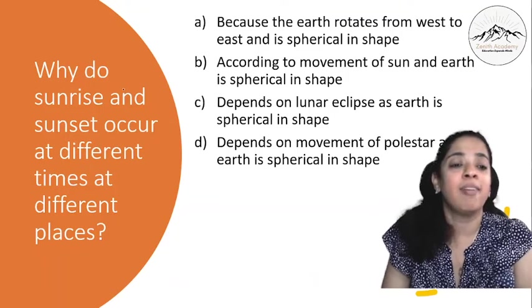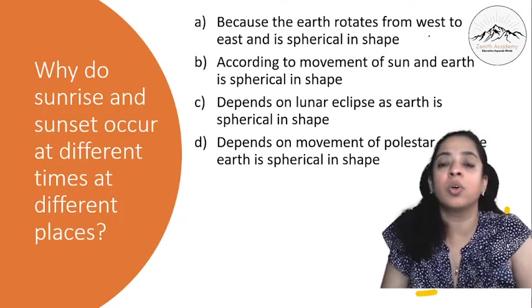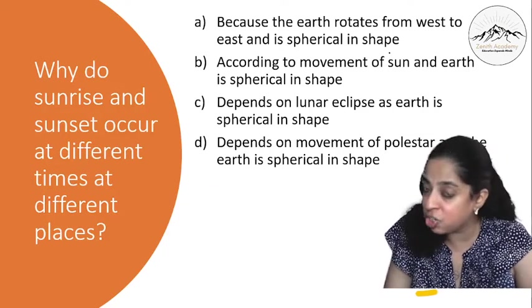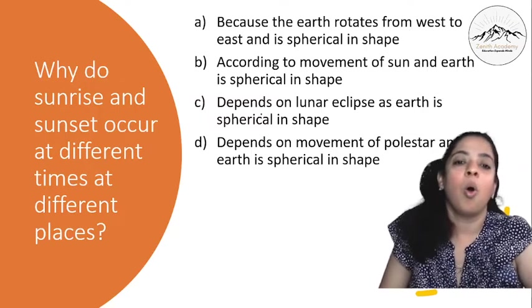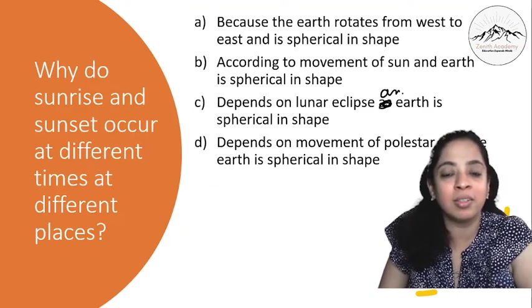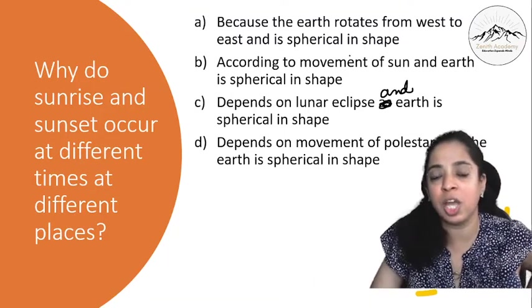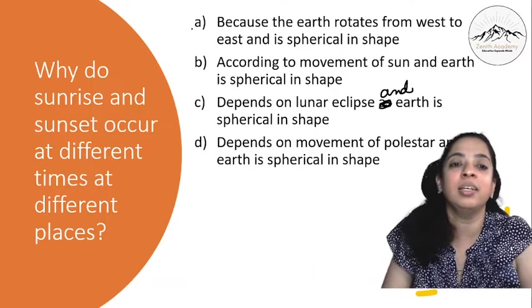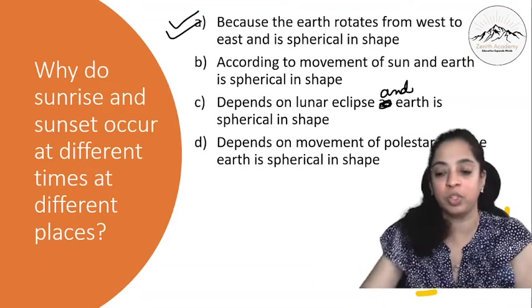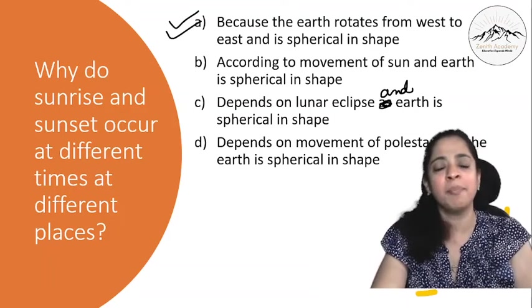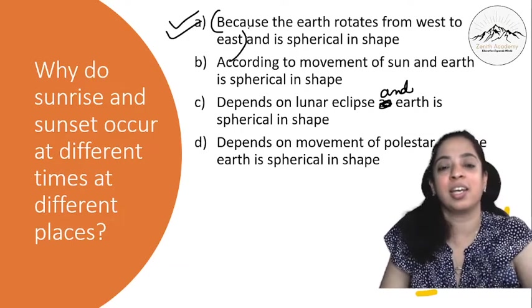Let's go ahead and do the next question. Why do sunrise and sunset occur at different times at different places? Because the earth rotates from west to east and the earth is spherical in shape, or according to the movement of sun and the earth is spherical in shape, or it depends on the lunar eclipse and the earth is spherical in shape, or it depends on movement of pole star and the earth is spherical in shape? So in four combinations this is correct, first one. Because earth rotates from west to east and is spherical in shape. Both the reasons are correct.